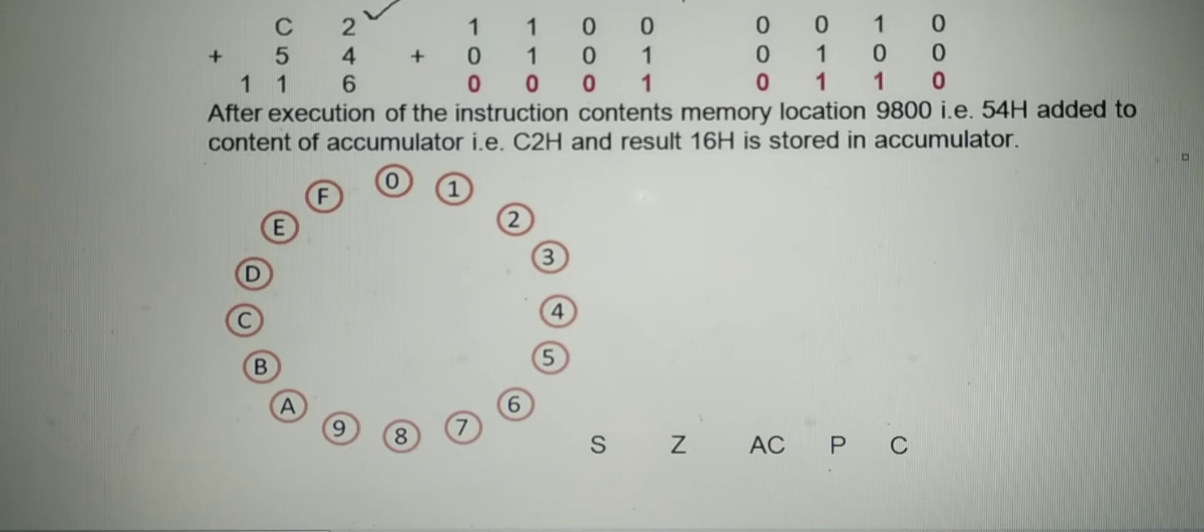When ADD M gets executed, in accumulator the accumulator contains the number C2. The content of memory location, the number which is stored at 9800, that is 54, gets added here.